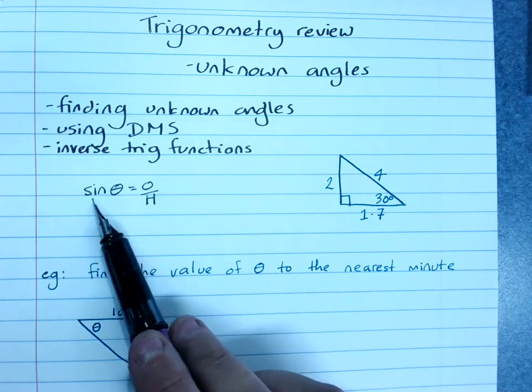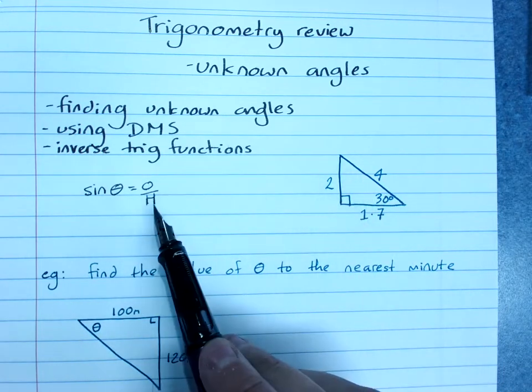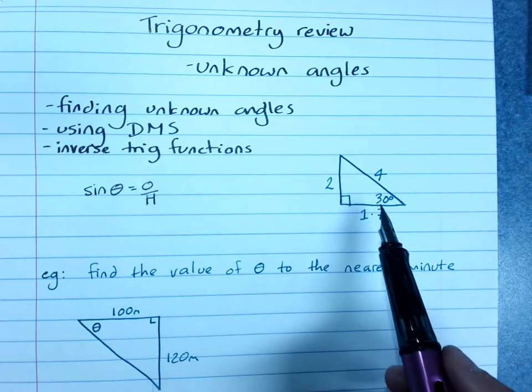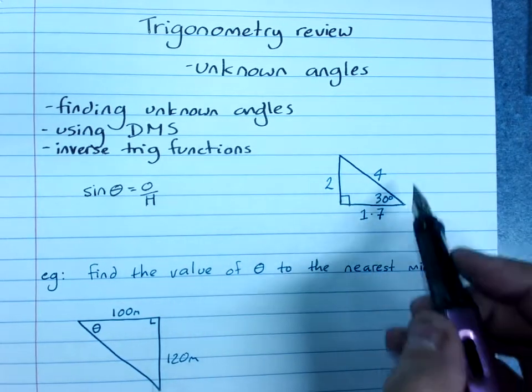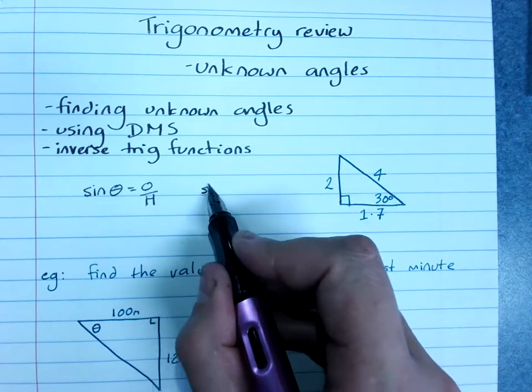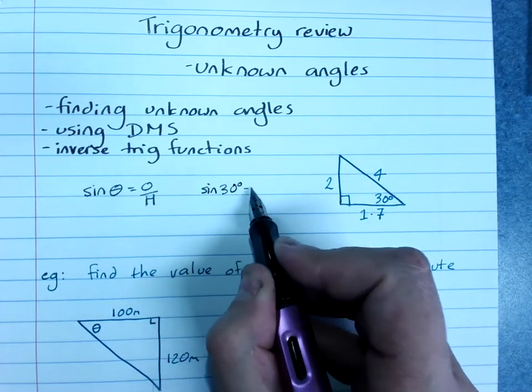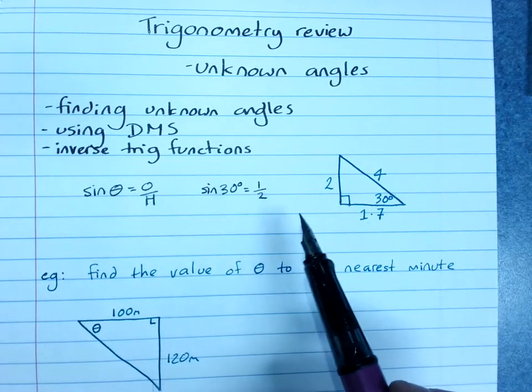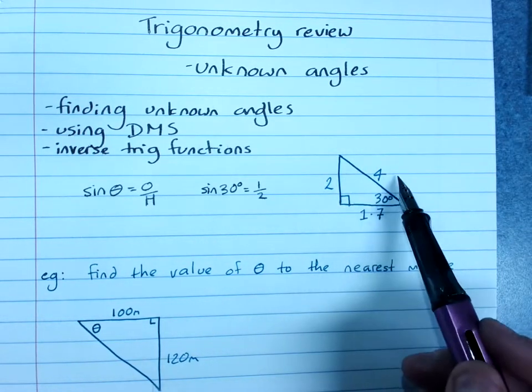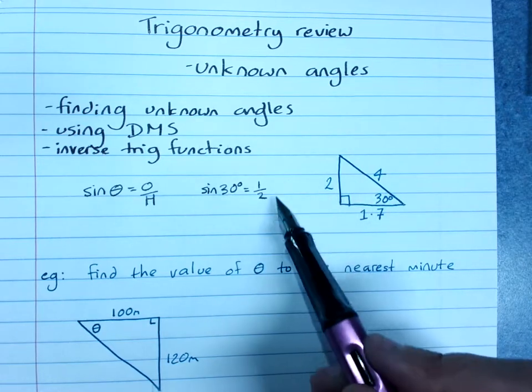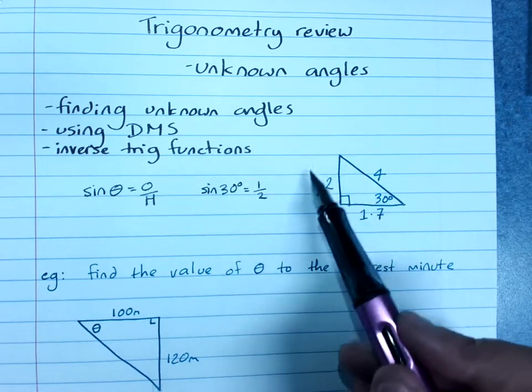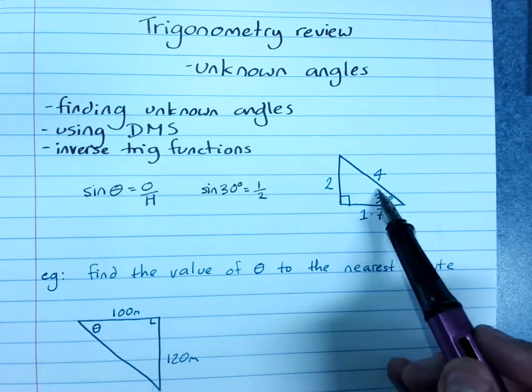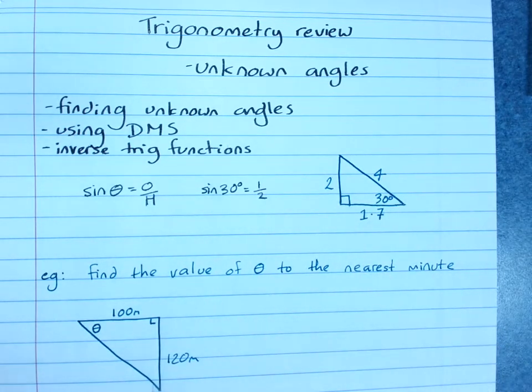If I look at sine of that angle, opposite over hypotenuse, that's 2 over 4, which is 1 half. This diagram is telling me that sine of 30 degrees equals 1 half. The opposite will be half the hypotenuse for every right angle triangle when I'm looking at the 30 degree angle.